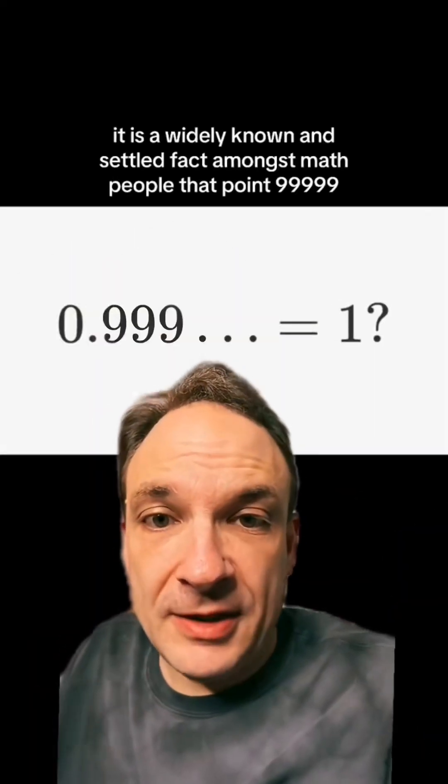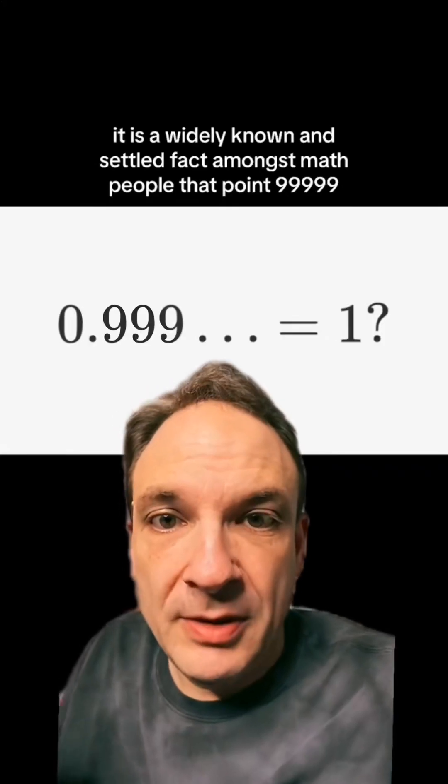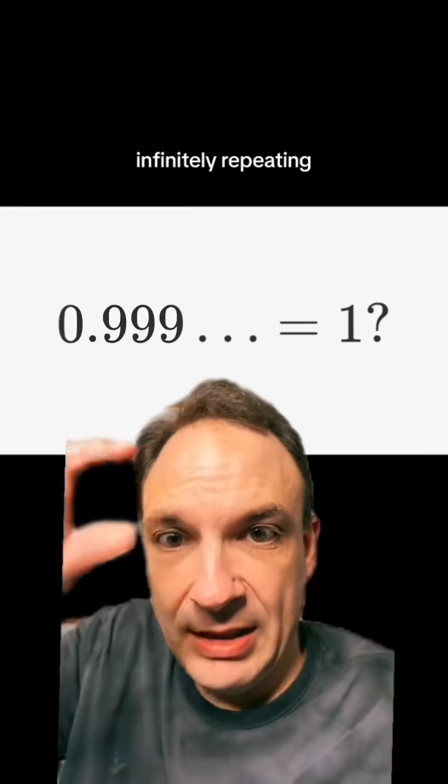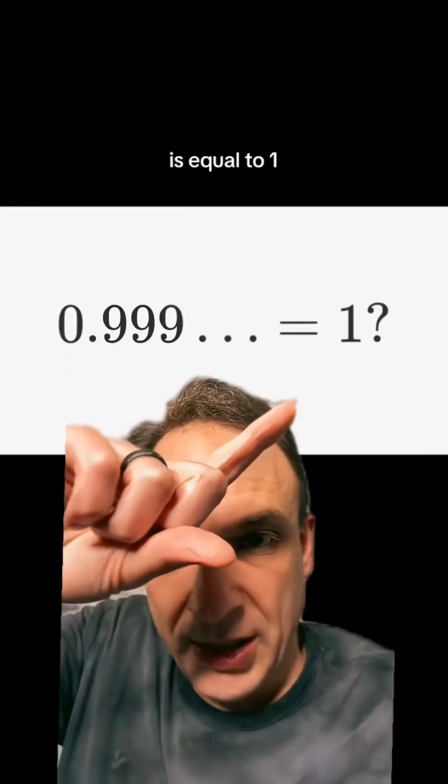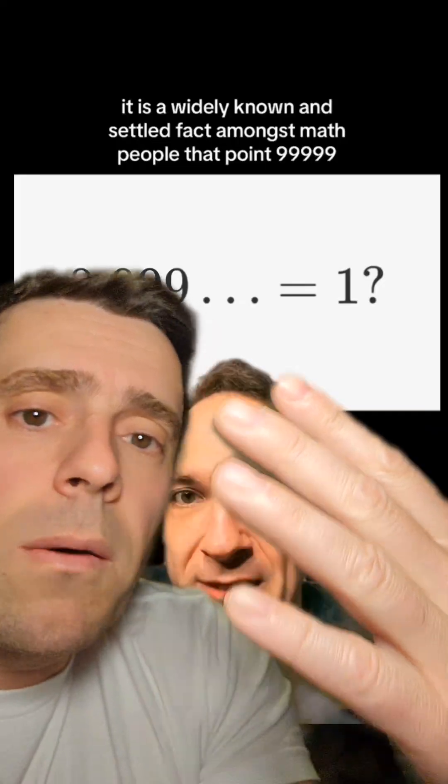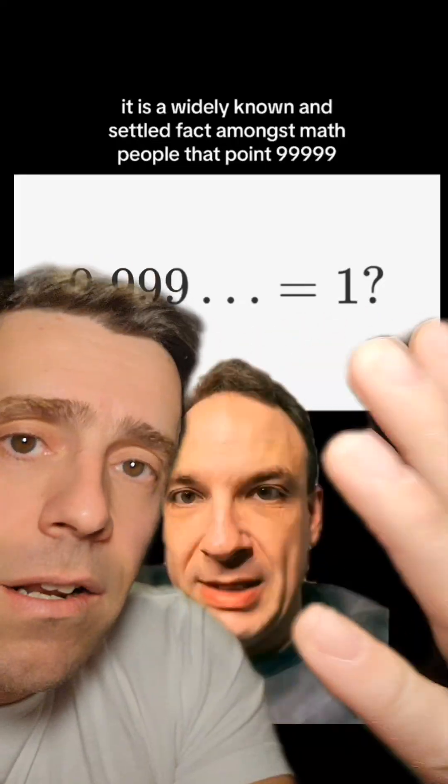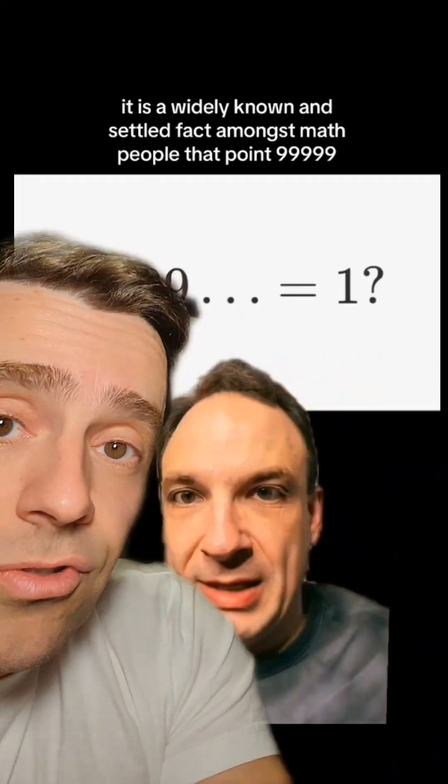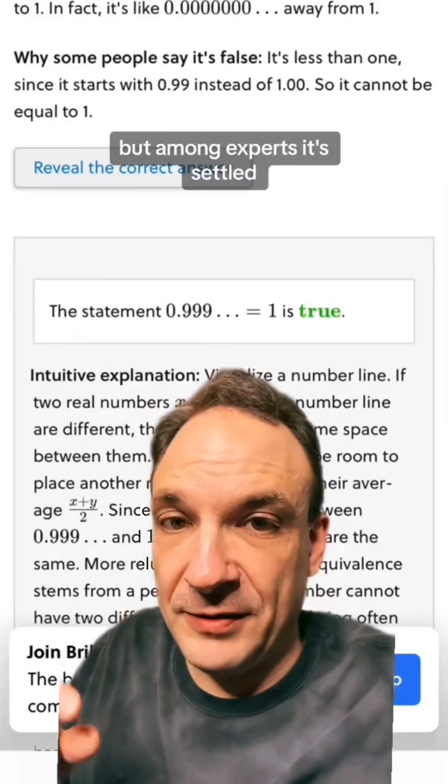It is a widely known and settled fact amongst math people that 0.99999 infinitely repeating is equal to 1. It's not settled among math people—it's settled among all people, including middle school students. But among experts, it's settled.